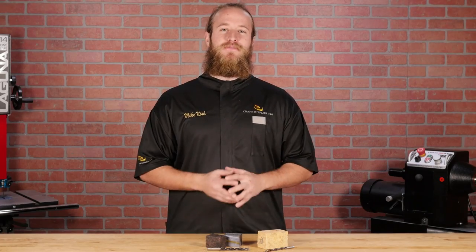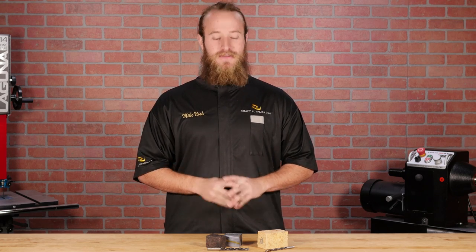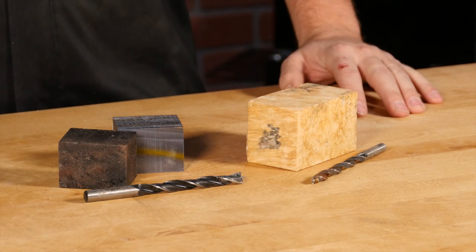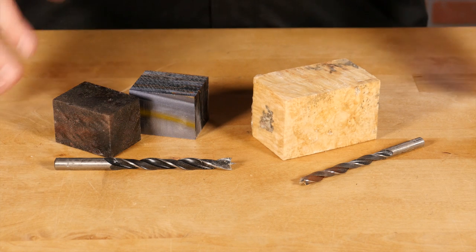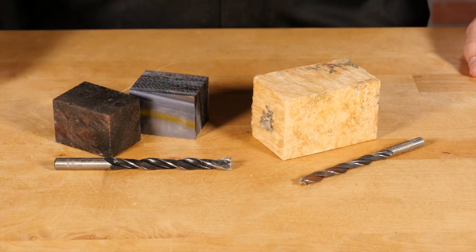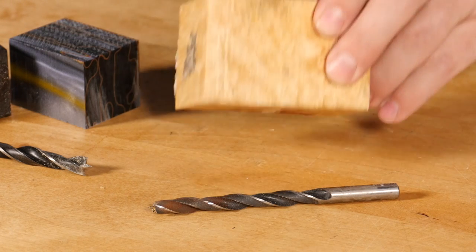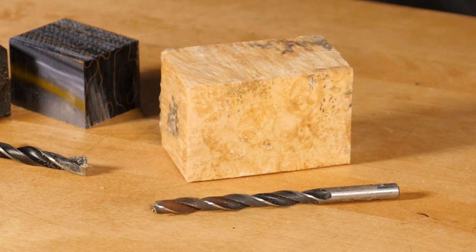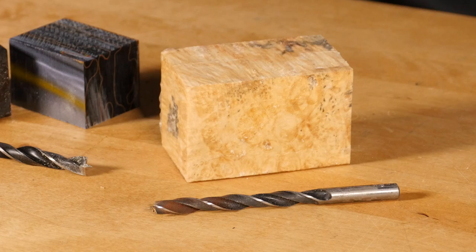Before we drill our blank, we need to talk about selecting the right size drill bit for our 3/8ths tap. This will depend on the density of the blank. For most hardwoods and acrylics, an 11/32nds drill bit is perfect. But if the wood is on the soft side, use a slightly smaller 5/16ths bit so you have a little more material to work with.